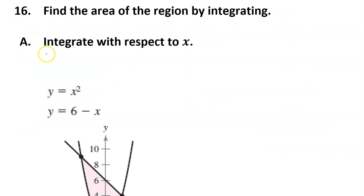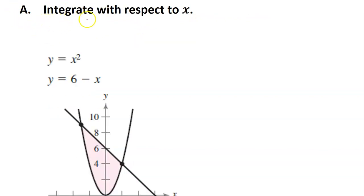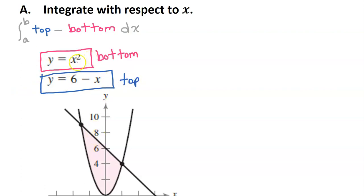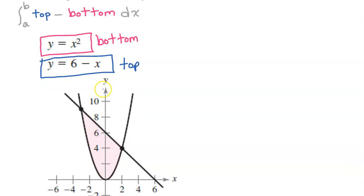For the last two problems, we will find the area of the shaded region by integrating. For problem A, we will integrate with respect to x, integrating from left to right — the top function minus the bottom function. The top function is the linear function y equals 6 minus x, and y equals x squared is the parabola, which is the bottom function. To set up the integral, we need the x coordinates of the intersection points, so let's set the two equations equal to each other.